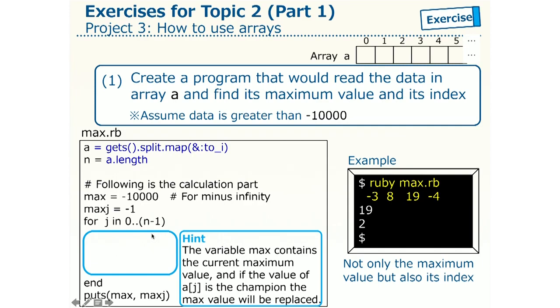then we change the value of max to AJ, replace it with a new champion value. We also overwrite j into maxj for keeping the index of the new max value. This computation is done in this blue part.